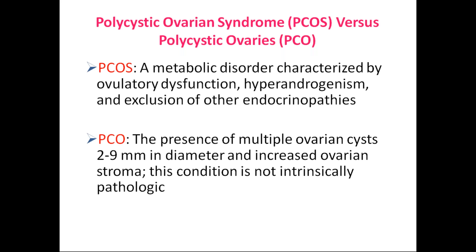There is an important difference between PCOS and polycystic ovaries. Polycystic ovarian syndrome is an endocrinopathy characterized by ovulatory dysfunction — oligo-ovulation or anovulation — and androgen excess or hyperandrogenism, either clinical or biochemical, after exclusion of other endocrinopathies. Polycystic ovarian morphology is simply the presence of multiple follicles 2 to 9 mm in diameter or increased ovarian stroma, which may be functional and not pathological. By seeing a polycystic picture on ultrasound alone, you cannot diagnose the patient as PCOS.